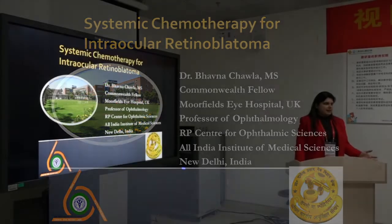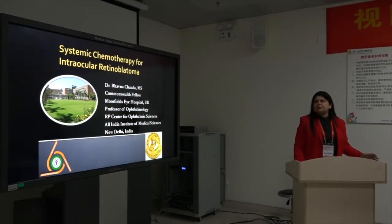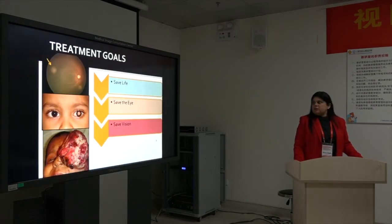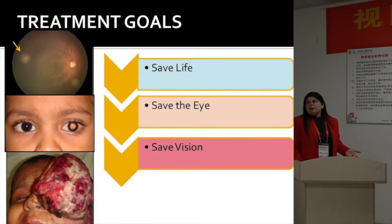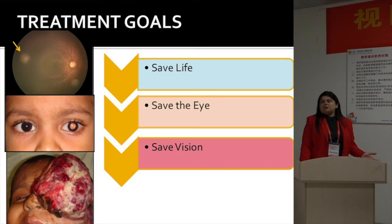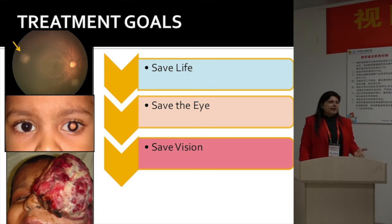What we do in India at our center, also from an ophthalmologist perspective. Systemic chemotherapy for intraocular retinoblastoma has been discussed. The treatment goals for retinoblastoma include saving life, saving the eye, and saving vision as far as possible, in that order.